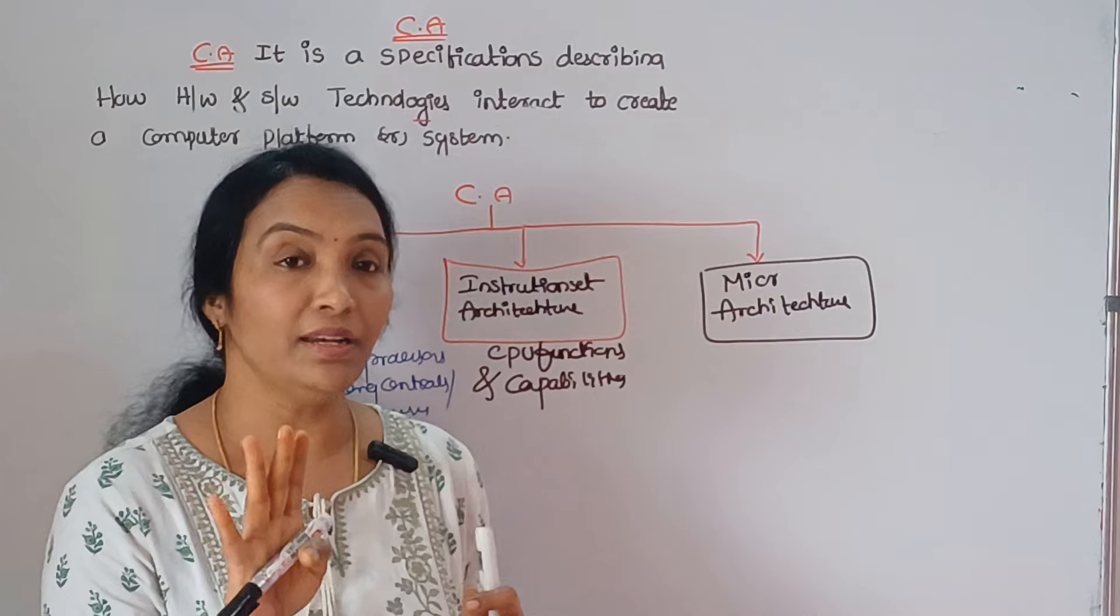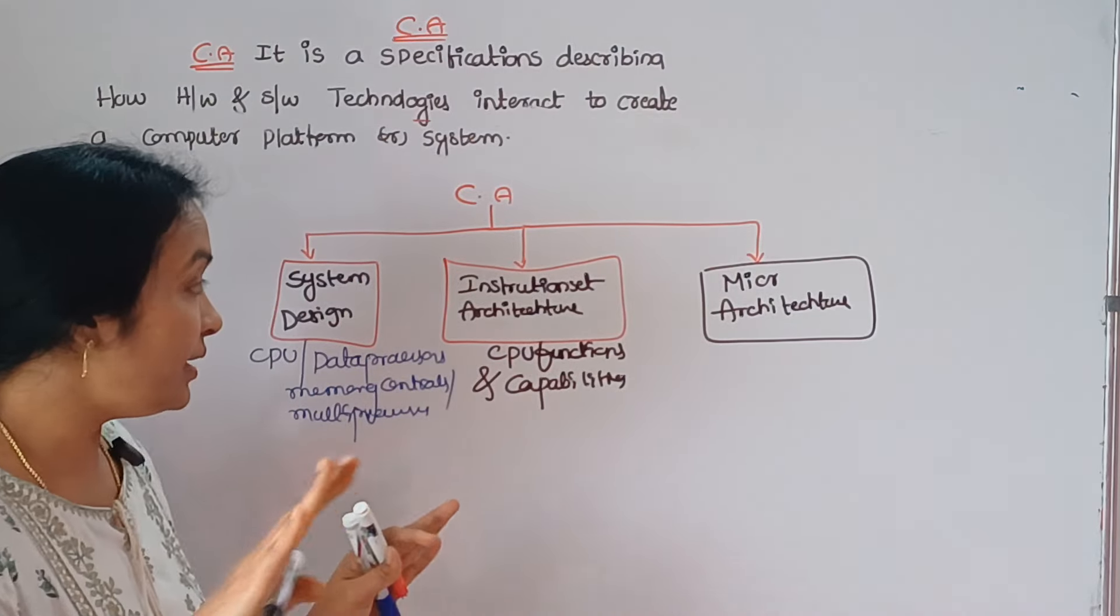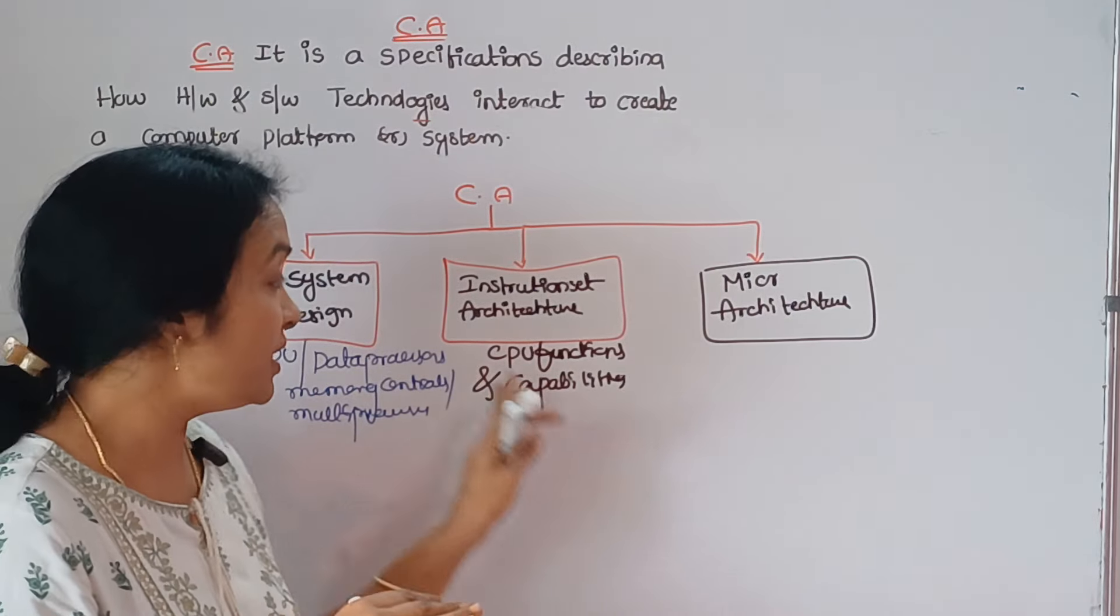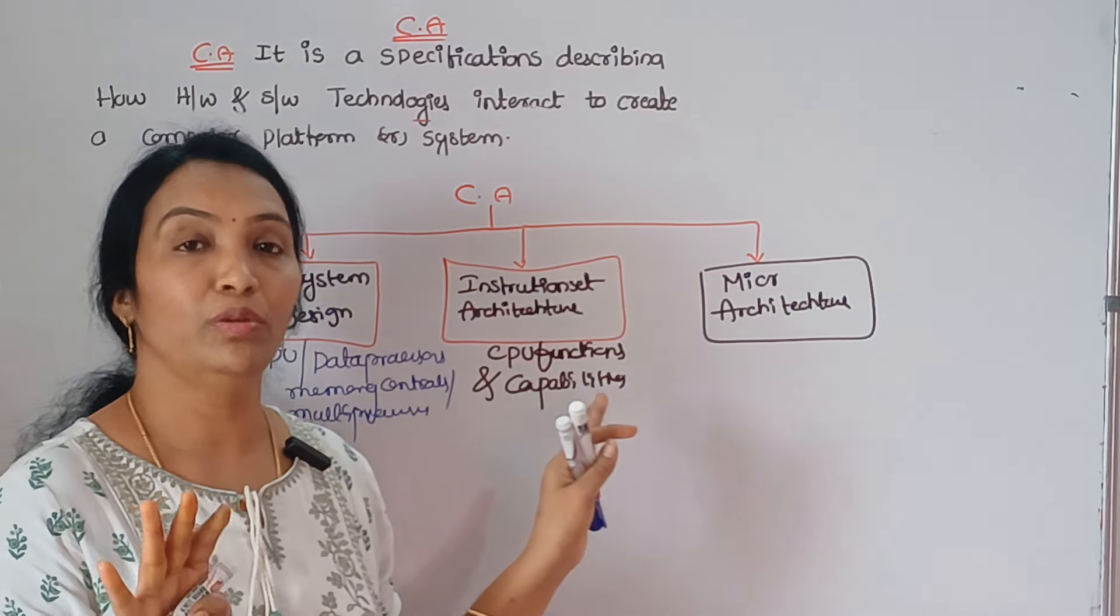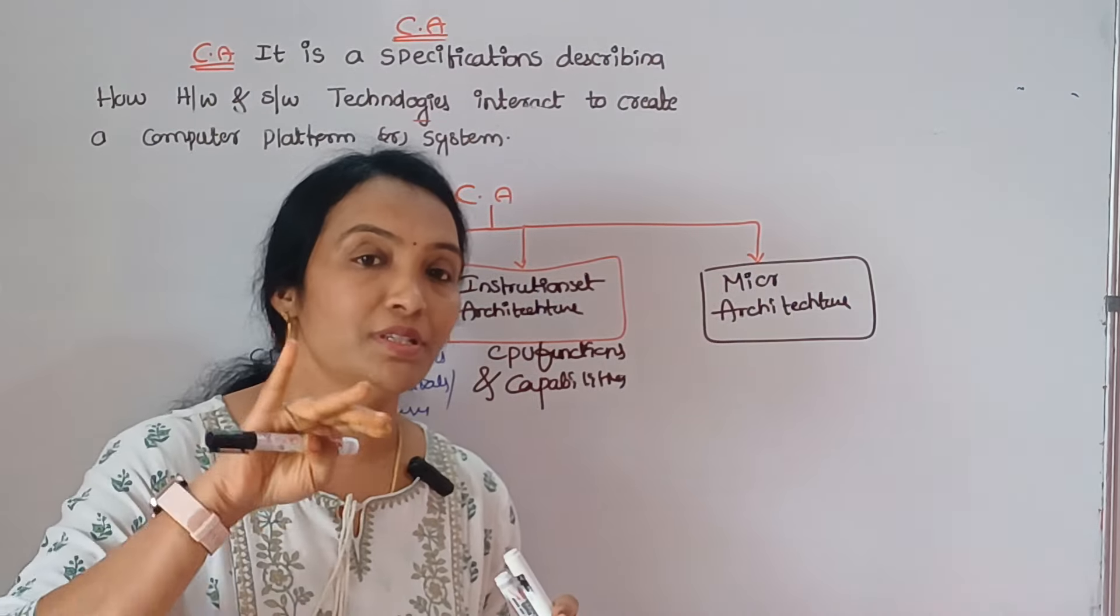The main part is what? Instruction. The main part is the CPU, the central processing unit. This is the central processing unit.